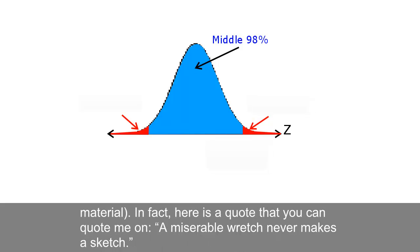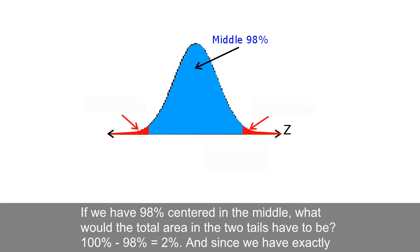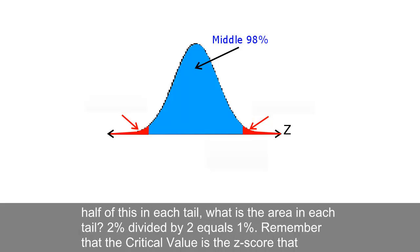In fact, here's a quote that you can quote me on. A miserable wretch never makes a sketch! If we have 98% centered in the middle, what would the total area in the two tails have to be? 100% minus 98% equals 2%. And since we have exactly half of this in each tail, what is the area in each tail? 2% divided by 2 equals 1%.